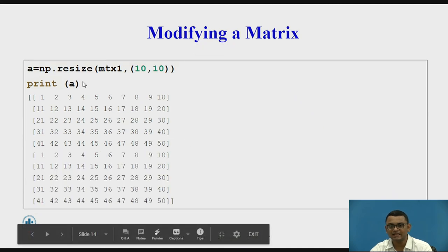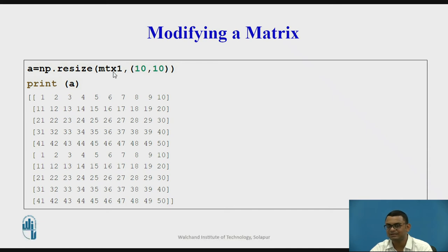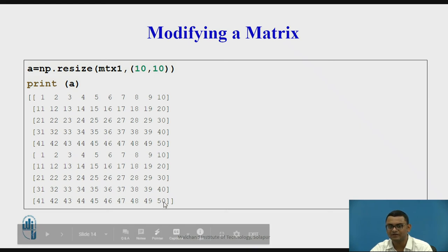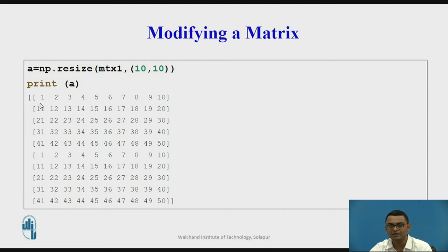When I call the resize function and resize MTX1 into a matrix of 10 rows and 10 columns, it prints the first 5 rows as the original contents of MTX1. Since we need 10 rows total, the remaining 5 rows are filled again with the same values from MTX1, giving array A with 10 rows and 10 columns filled with the same values twice.